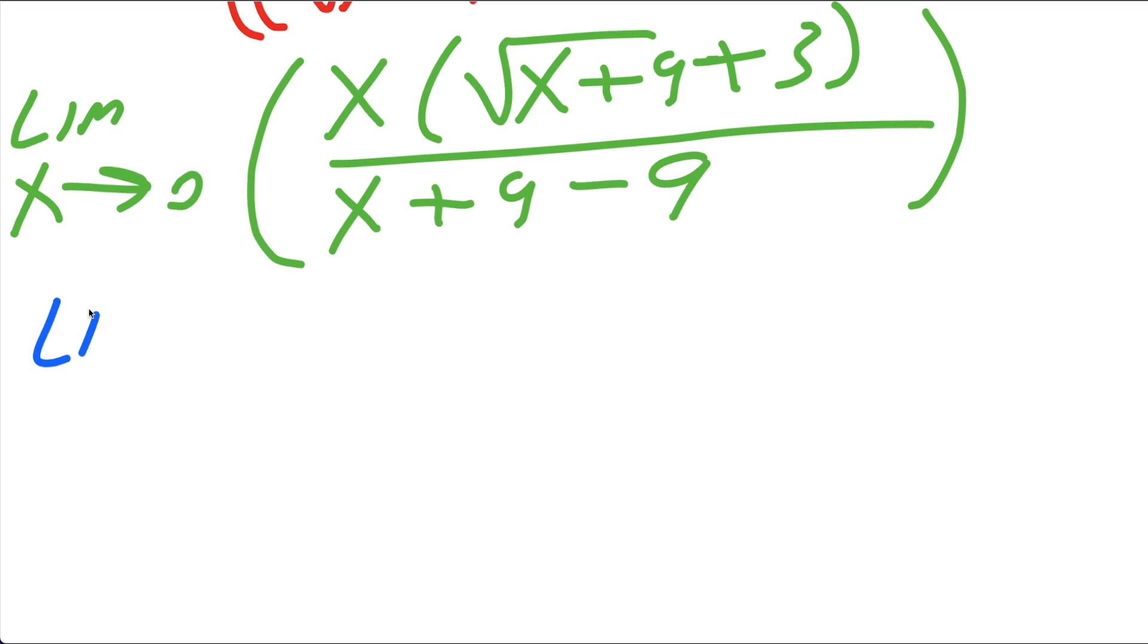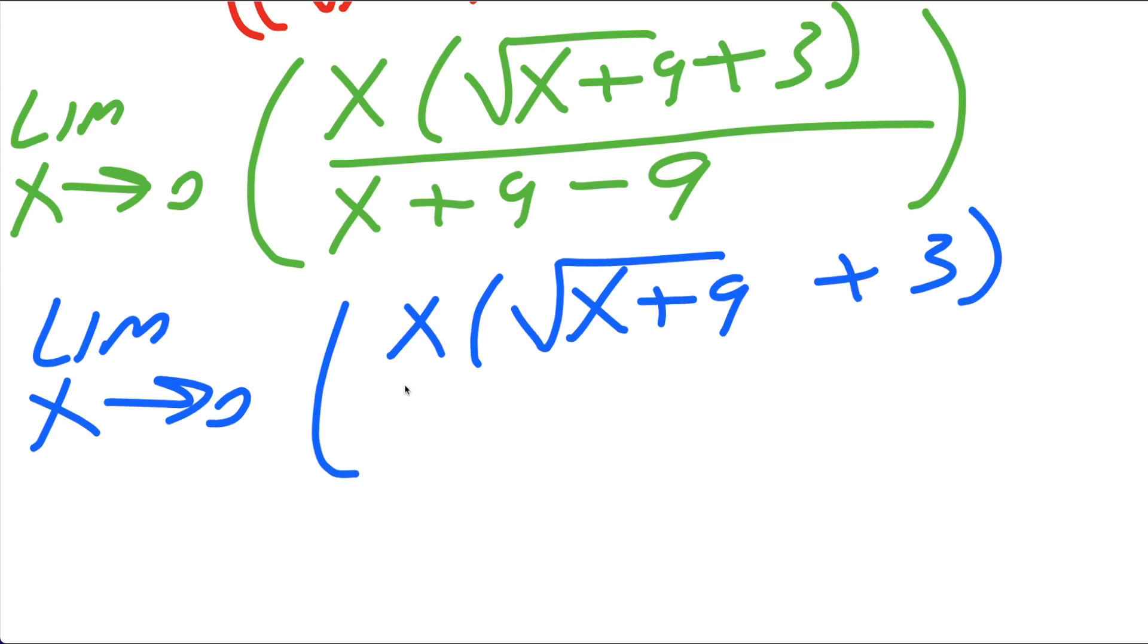Okay, now we'll clean up a little bit. So we get our limit of x approaching 0, parenthesis, we'll keep the numerator, x, parenthesis, the square root of x plus 9, and then we have a plus 3. This whole thing will be divided by, now notice, 9 minus 9 is 0. So all this got cancelled but the x.